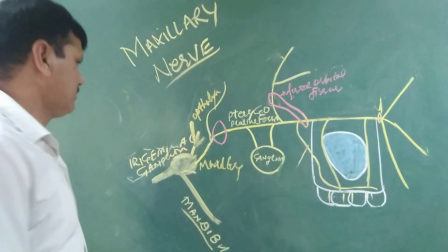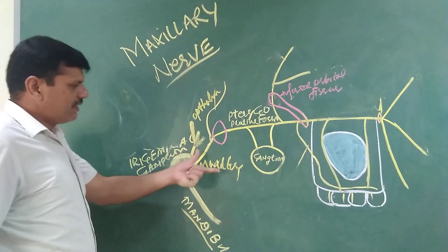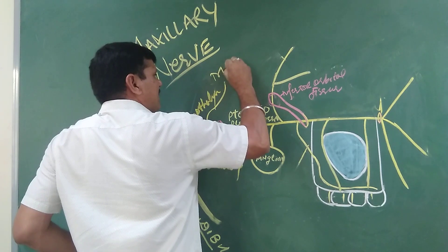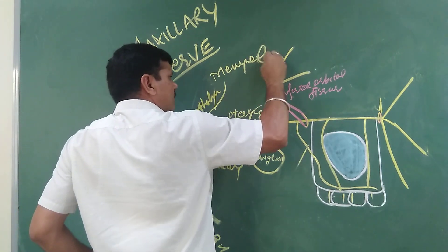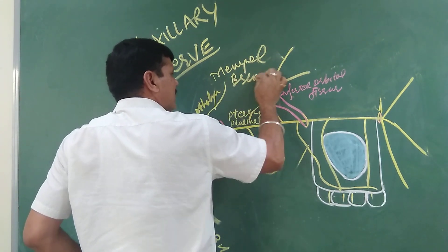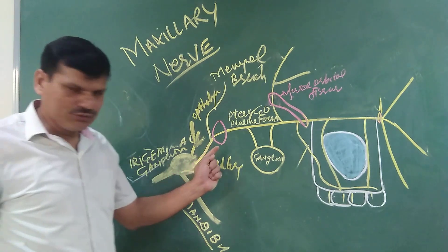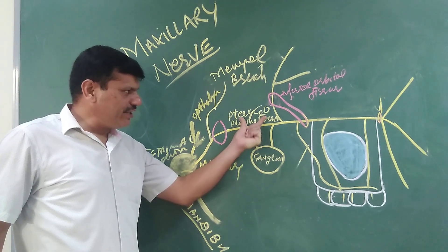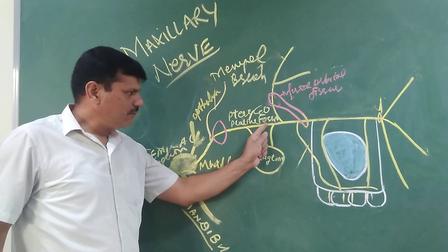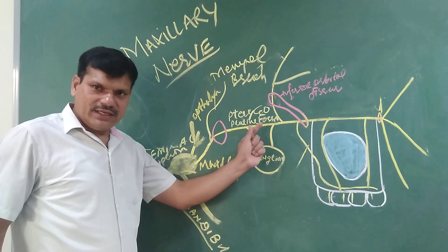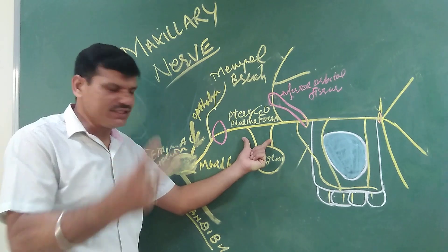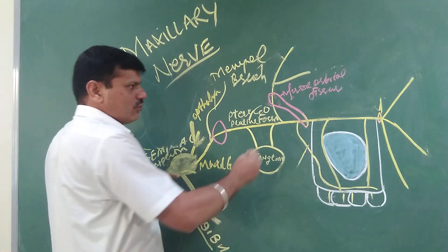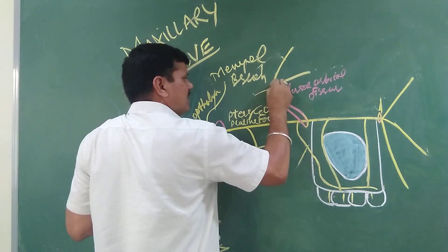Now the branches: in the middle cranial fossa, it gives one branch which is the meningeal branch for the meninges of the middle cranial fossa. Then it passes through the foramen rotundum and lies in the pterygopalatine fossa, where it sends two ganglionic branches to the pterygopalatine ganglion. It also gives a zygomatic branch.